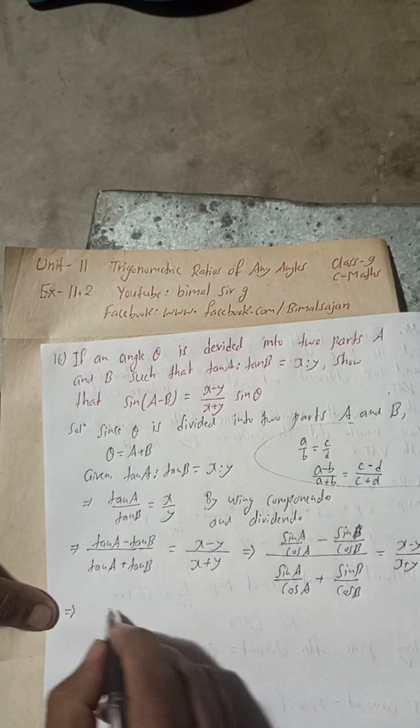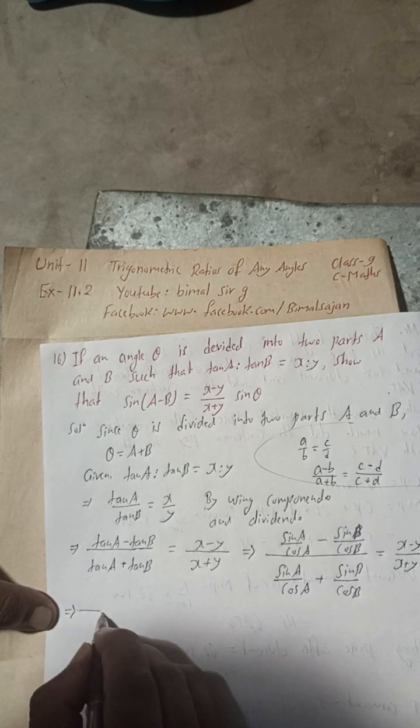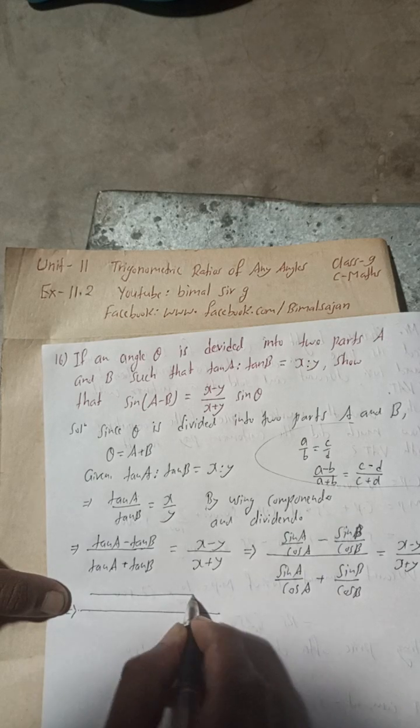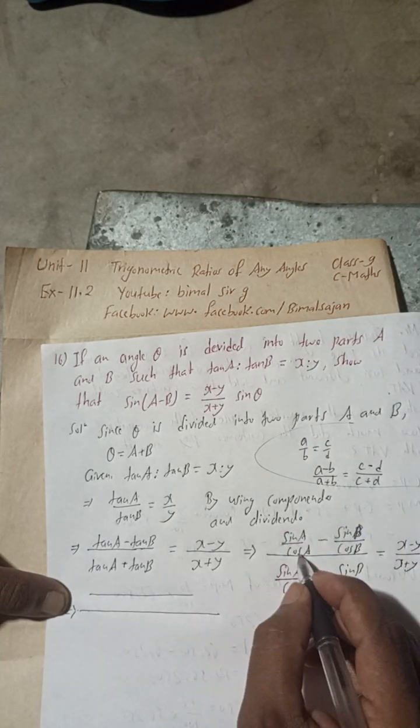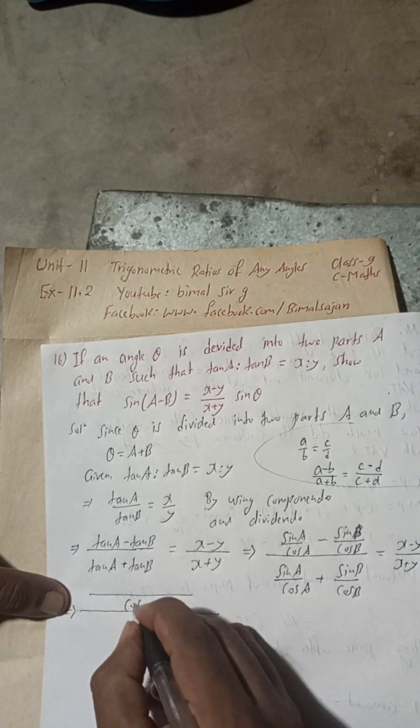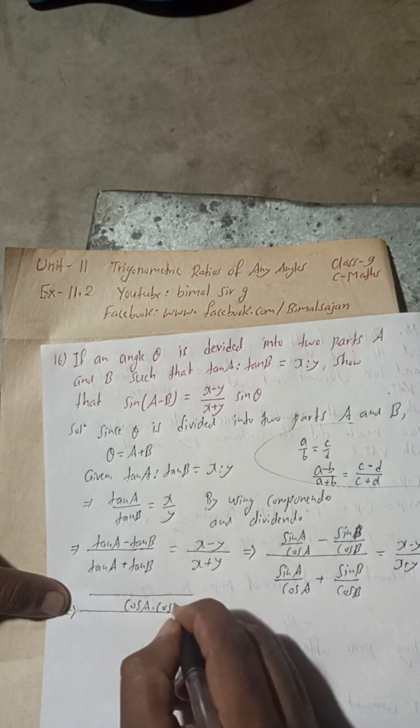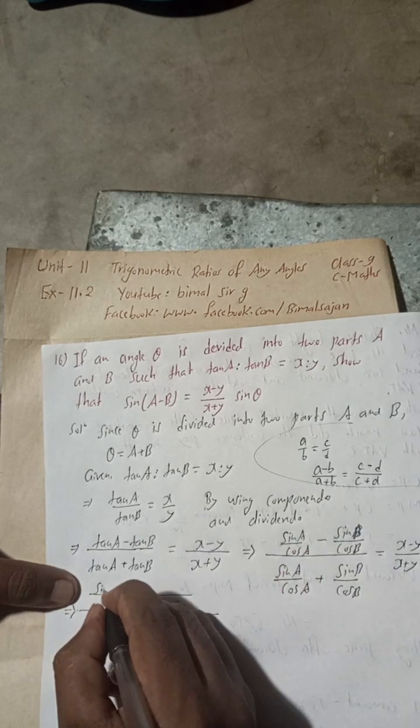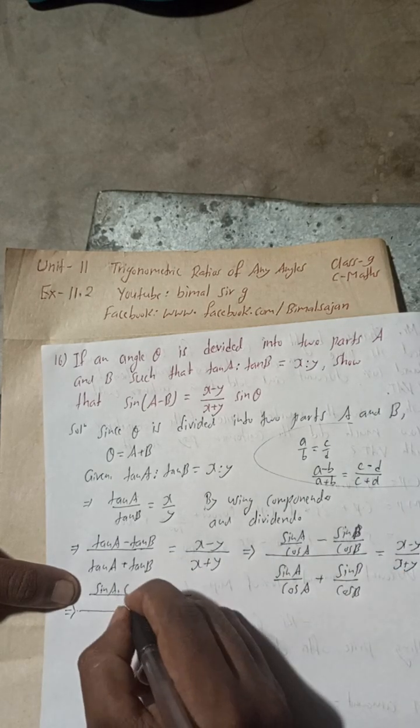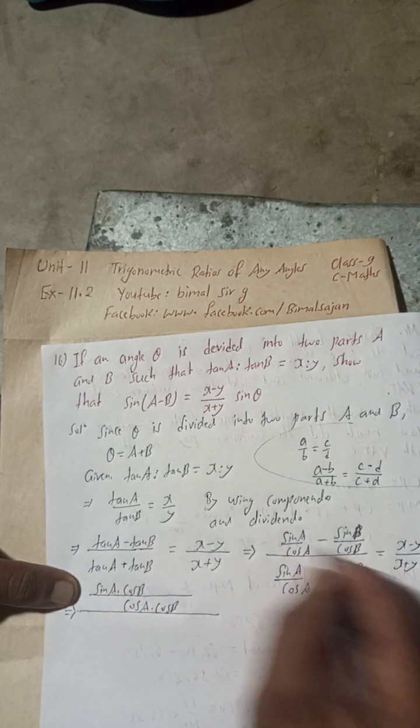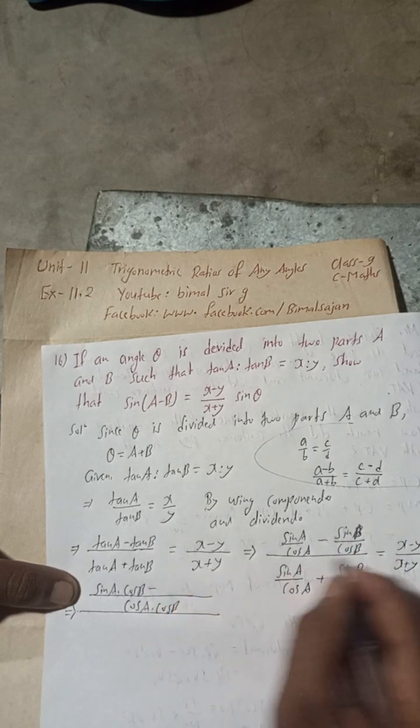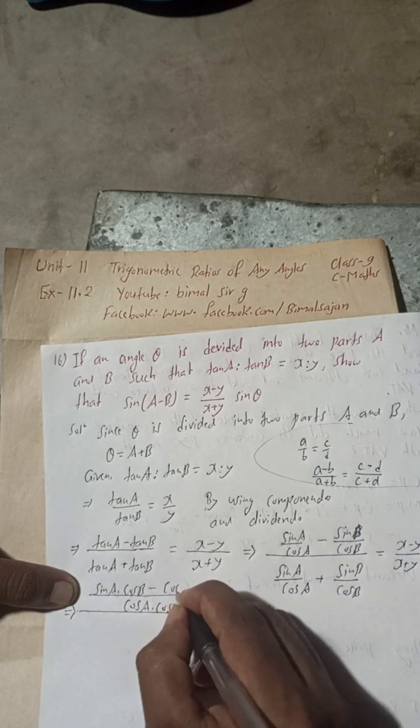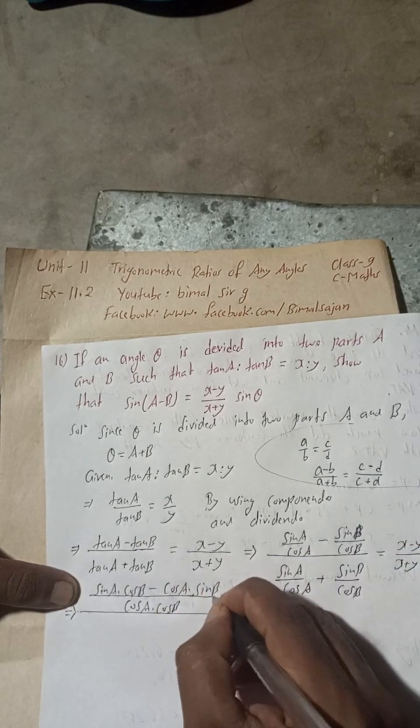Now, take a reference line. This part numerator part, what is LCM here? Cos A and cos B. So cos A into cos B. Multiply this with cos B and multiply sin B with cos A. So this can be written as sin A into cos B, multiply cos B minus sin B, cos A into sin B.